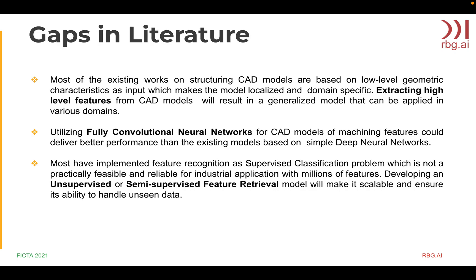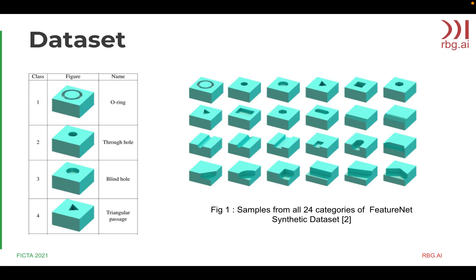Most of the existing works on structuring CAD models are based on low-level geometric characteristics as input, which makes the model localized and domain-specific. Hence, we decided to use FCGF for extracting high-level features as it would result in a generalized model. Most have implemented feature recognition as a supervised classification problem, which is not practical in industrial applications with millions of features. But an unsupervised or semi-supervised feature retrieval model will make it scalable and ensure its ability to handle unseen data. The FeatureNet dataset has 24,000 CAD files in STL format with machining features from 24 common categories found in the manufacturing industry.